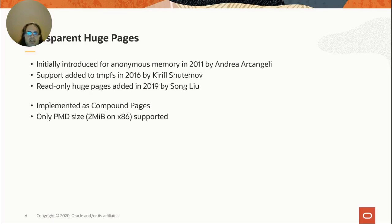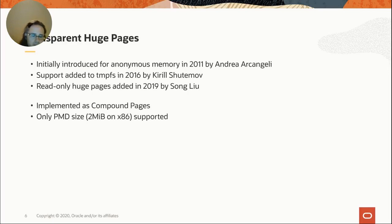We've used compound pages in the form of transparent huge pages for a while. In 2016, when Kirill added them to TempFS, that was when the page cache first got the ability to store transparent huge pages. In 2019, Song added support for read-only huge pages, building on Kirill's work, now also available for file systems using block or network storage. This was implemented using compound pages, but it was very limited — only two sizes were supported: order zero pages (normal base pages), and PMD-size pages, which on x86 is order nine, or two megabytes.